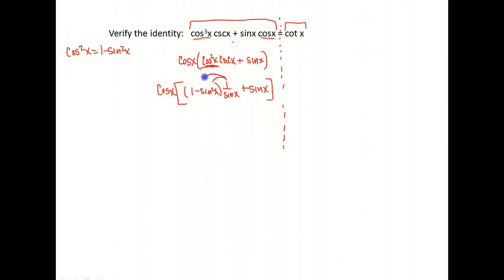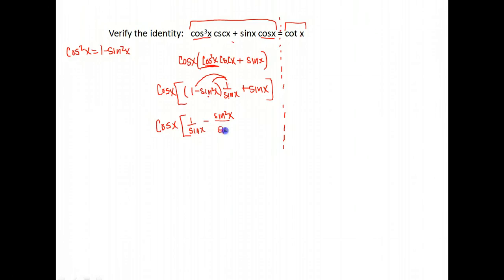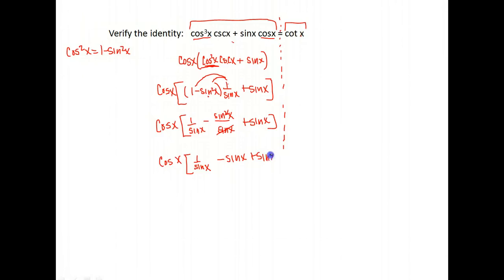I'm going to distribute this 1 over sine x. On the outside, I still have that cosine x. Inside, that gives me 1 over sine x. Minus — if I take 1 over sine x times sine squared x — that gives me sine squared x over sine x, and then I have plus sine x. Notice here I have sine squared over sine. I can reduce that: sine divided into sine squared just leaves me with sine x. So now I have 1 over sine x minus sine x plus sine x.